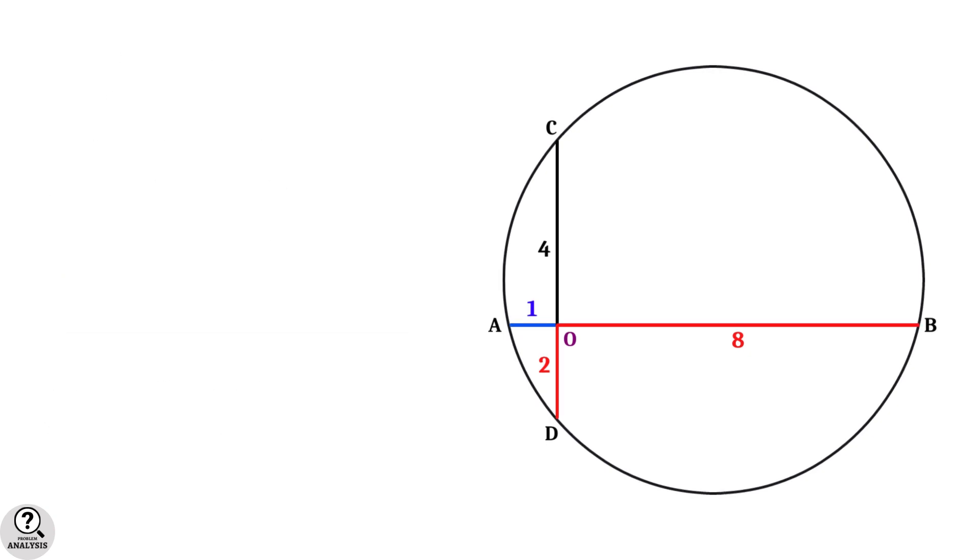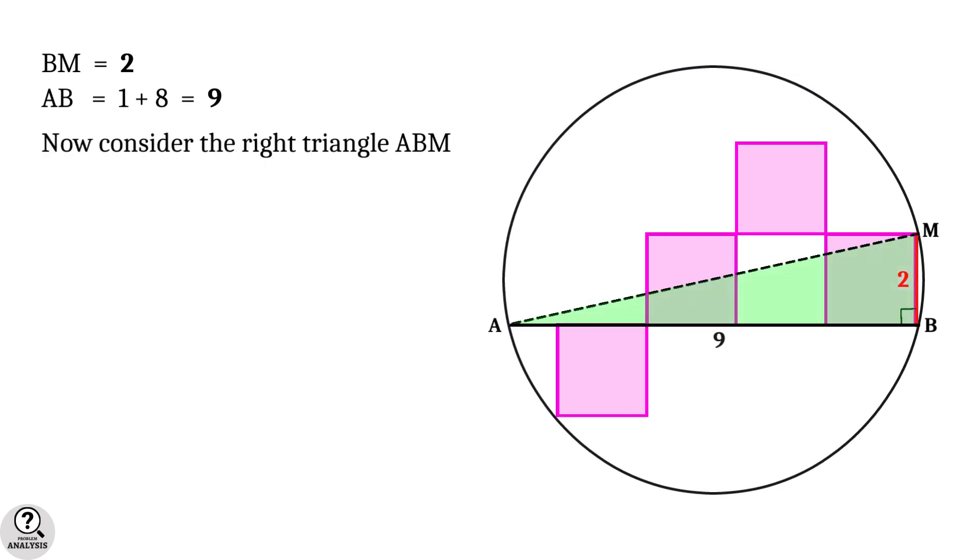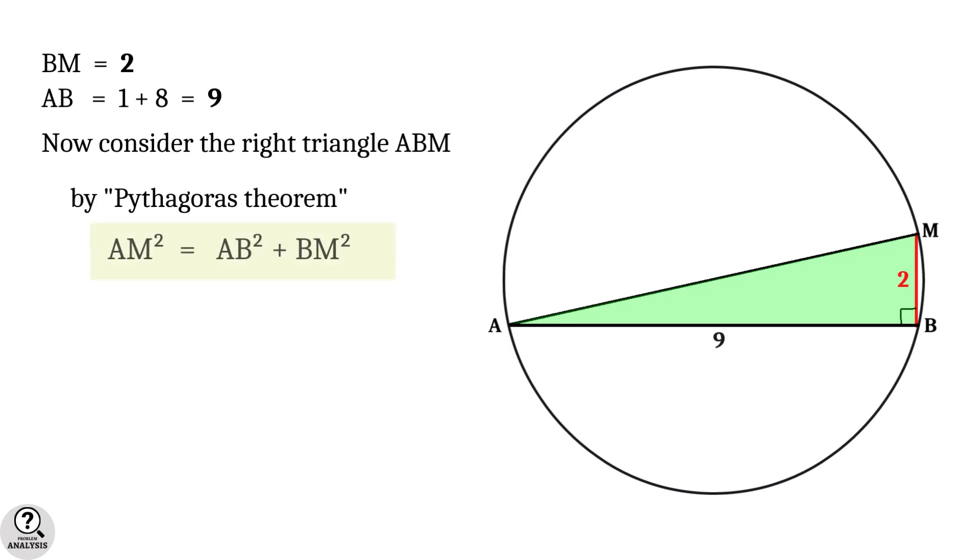Now coming back to the actual figure, we have BM equals 2 units and AB equals 1 plus 8 equals 9 units. Now consider the right triangle ABM.